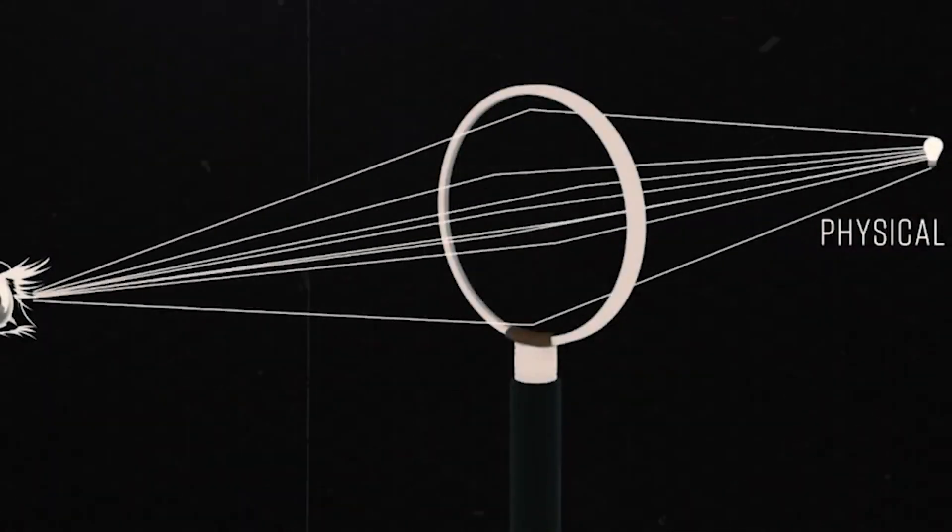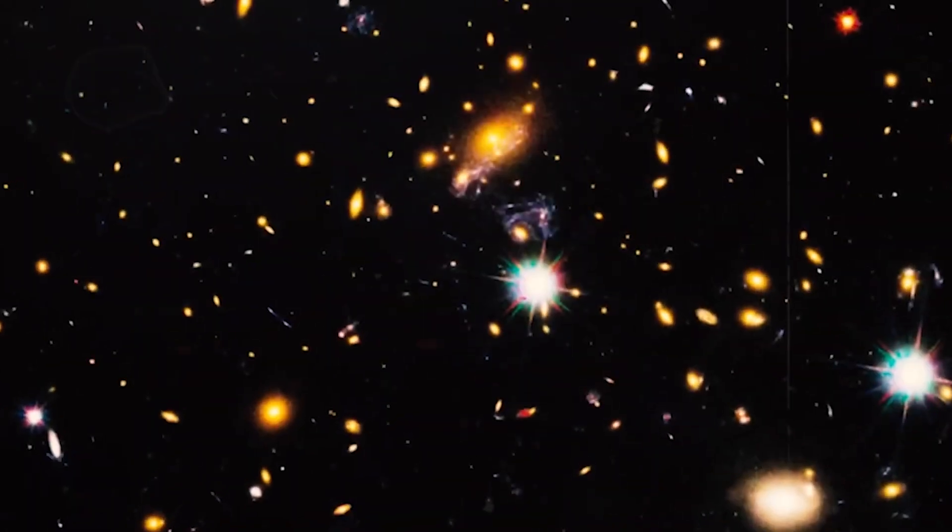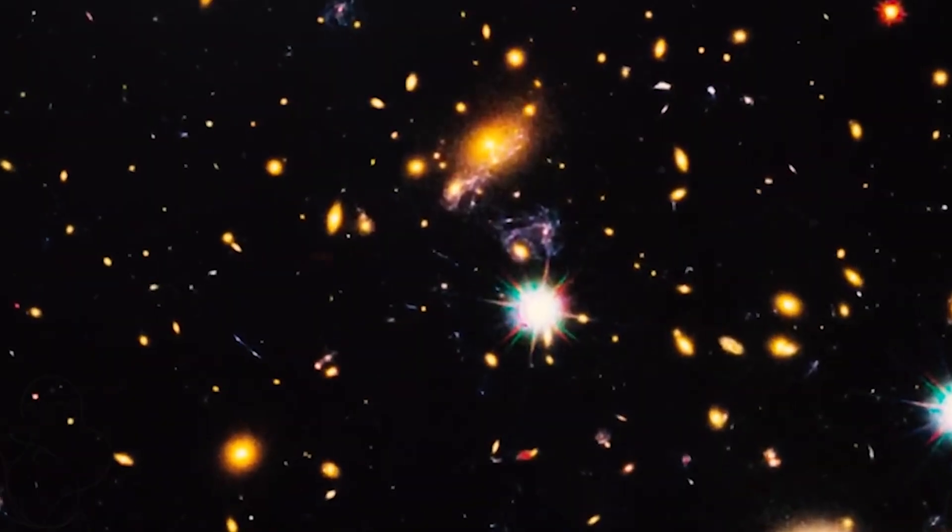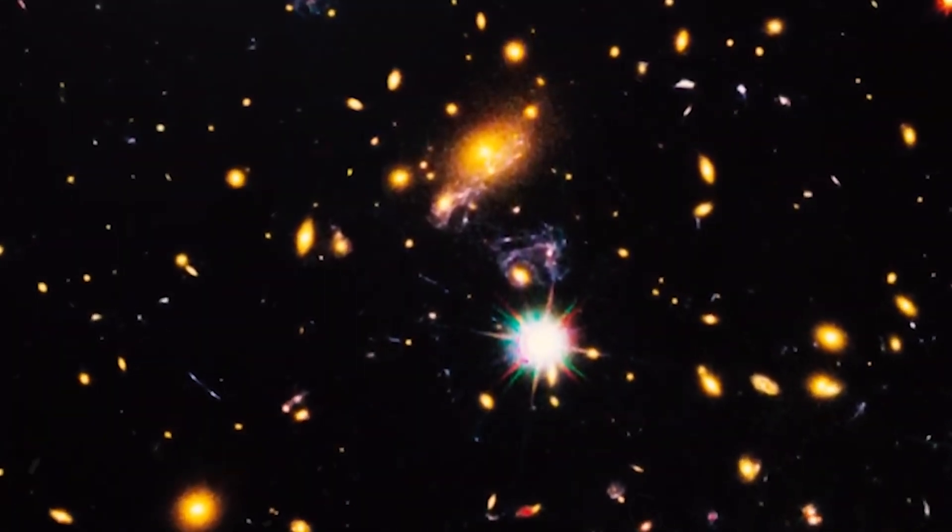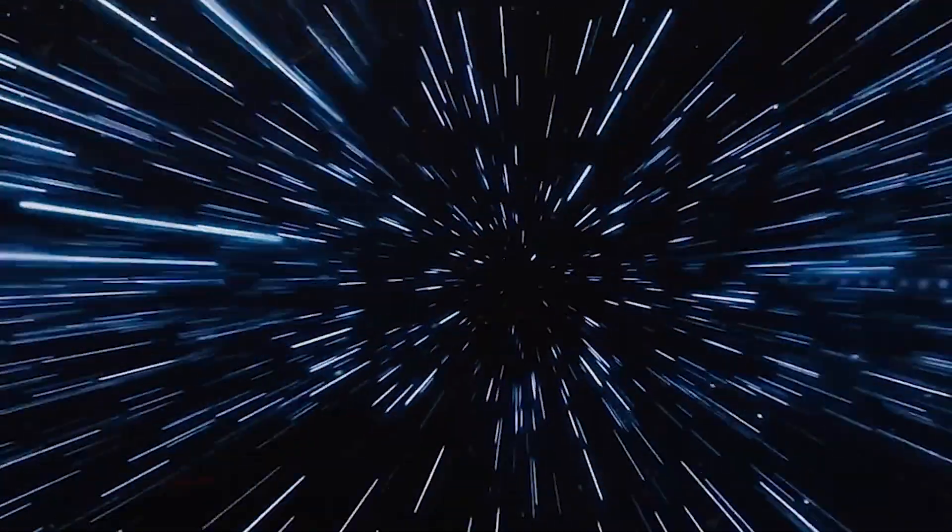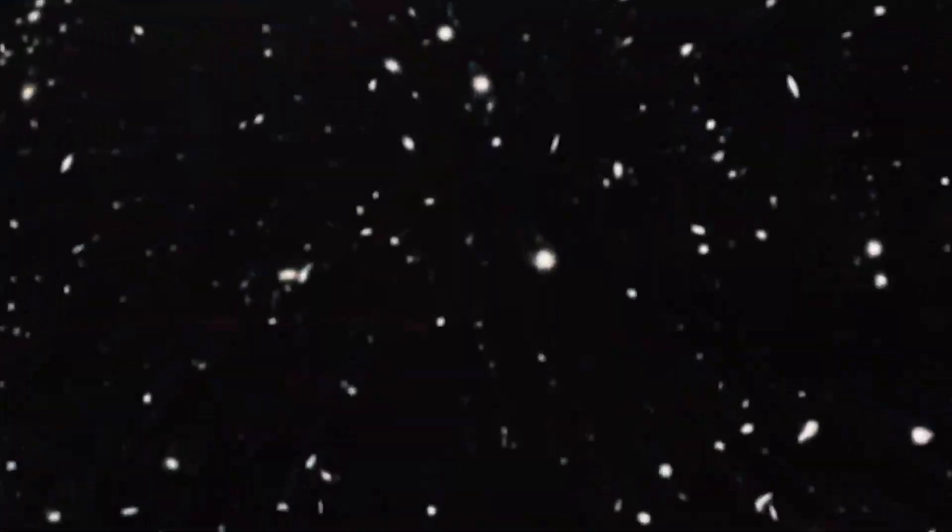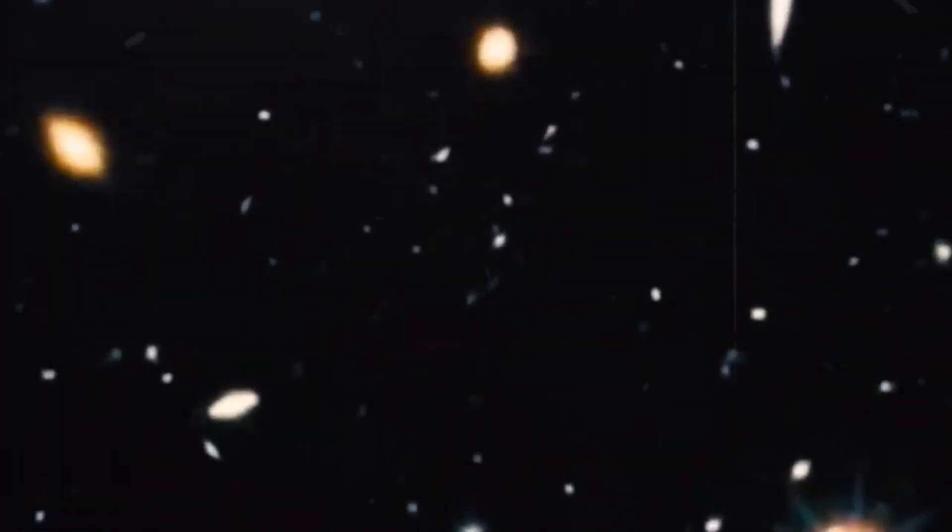Webb used the gravitational lensing effect of a galaxy cluster called MACS J1149.5+2223, which is located about 5 billion light-years away from us, to boost the signal of the black hole and the galaxy by a factor of 50. This allowed us to capture the image and spectrum of the black hole and the galaxy with unprecedented clarity and detail.